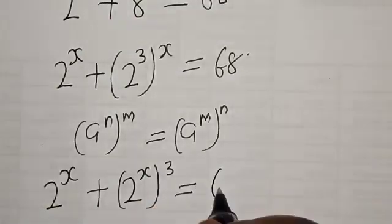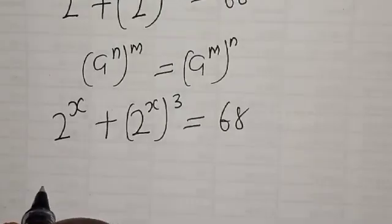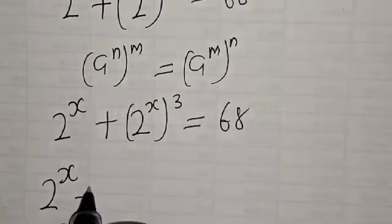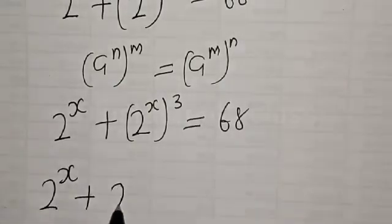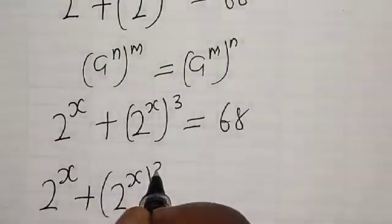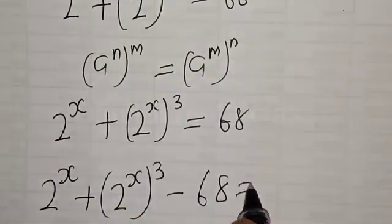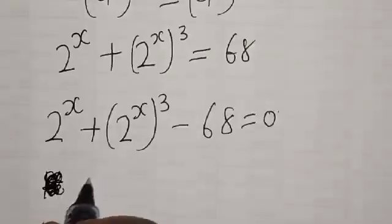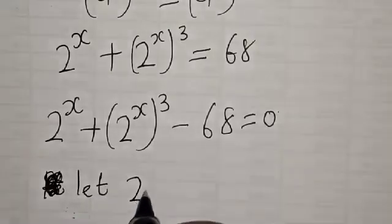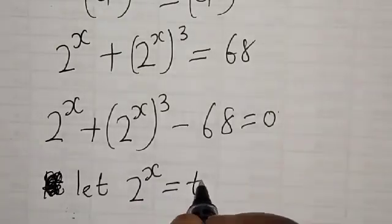This equals 68. Now let t equal 2 raised to power x, so we substitute: we have t plus t raised to power 3 minus 6t equal to t, setting up the substitution.